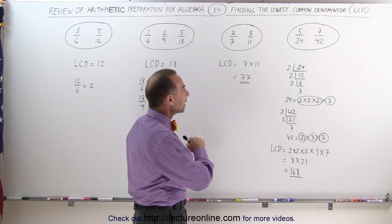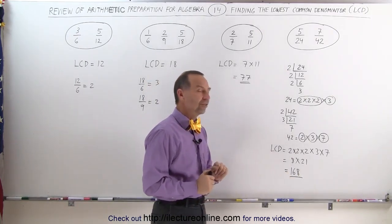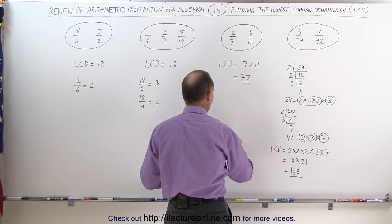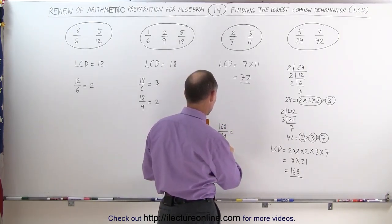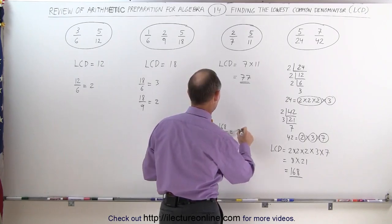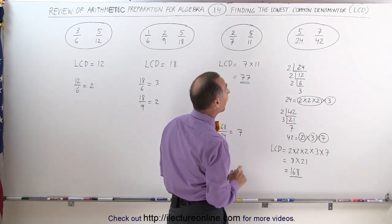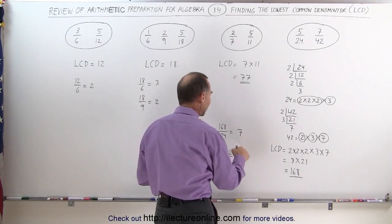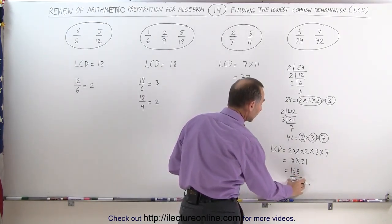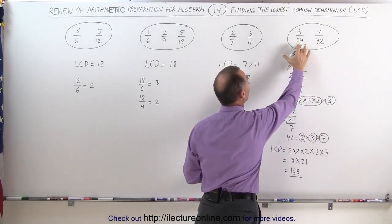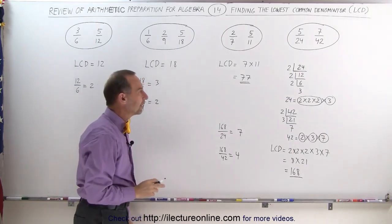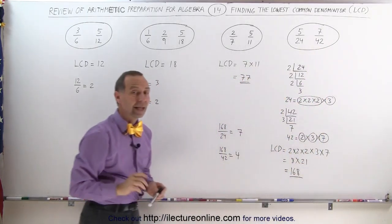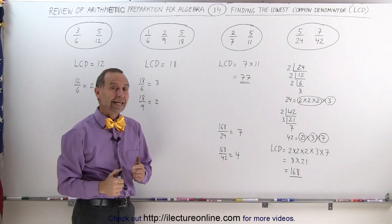The lowest common denominator — the smallest number that all other denominators fit evenly into — is 168. To verify: 168 divided by 24 equals 7, and 168 divided by 42 equals 4. In both cases we get integer numbers, which confirms that 168 is the LCD and that both 24 and 42 fit evenly into it. There is no smaller number where both 24 and 42 fit evenly. That's how we find the lowest common denominator using the third method.